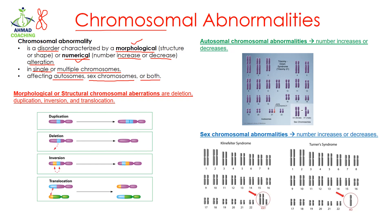First, let's talk about morphological or structural chromosomal aberrations. There are four types of structural chromosomal abnormalities. The first one is duplication. In the case of duplication, a particular segment of a chromosome is duplicated — it was present once but when duplicated it is present twice.